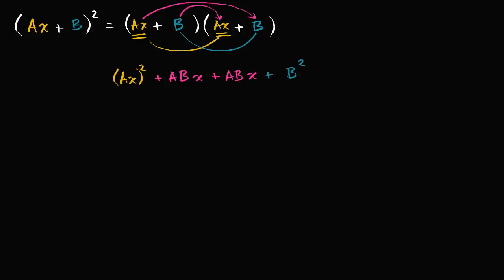And so what are you left with? You're going to be left with Ax squared, and then you have plus two ABx. And then finally plus B squared.